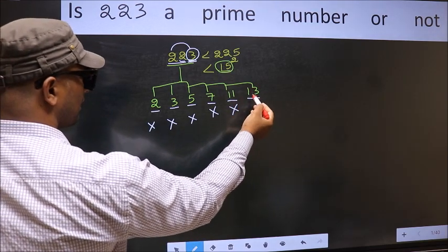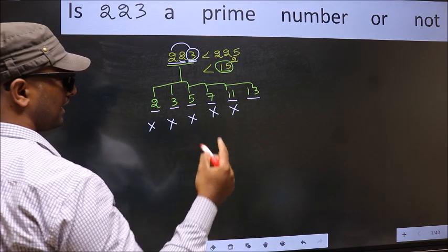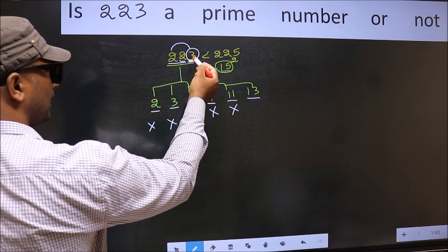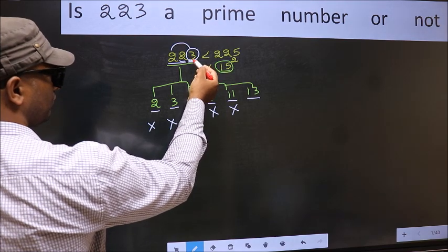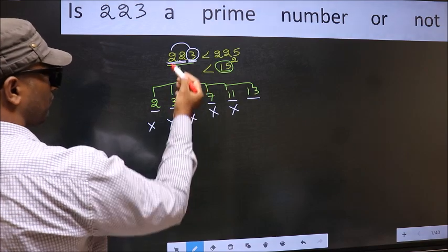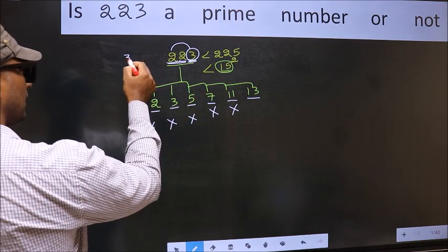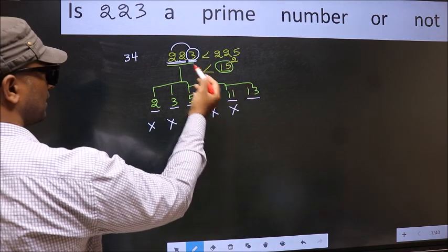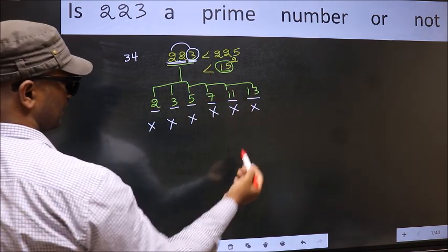Next number 13. To check divisibility by 13, to this number you do into 4. So 3 into 4, 12. Add to 22: 22 plus 12, 34. 34 is not divisible by 13 so this number also not divisible by 13.